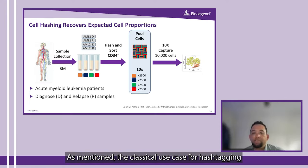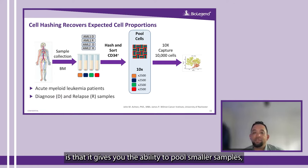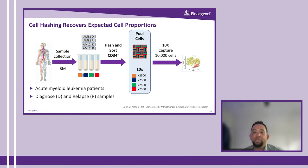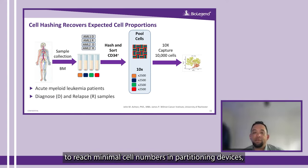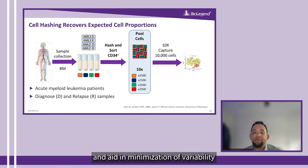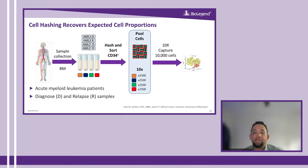A classical use case for hashtagging is that it gives you the ability to pool smaller samples to reach minimal cell numbers in partitioning devices, and aids in the minimization of variability and batch effects between samples.